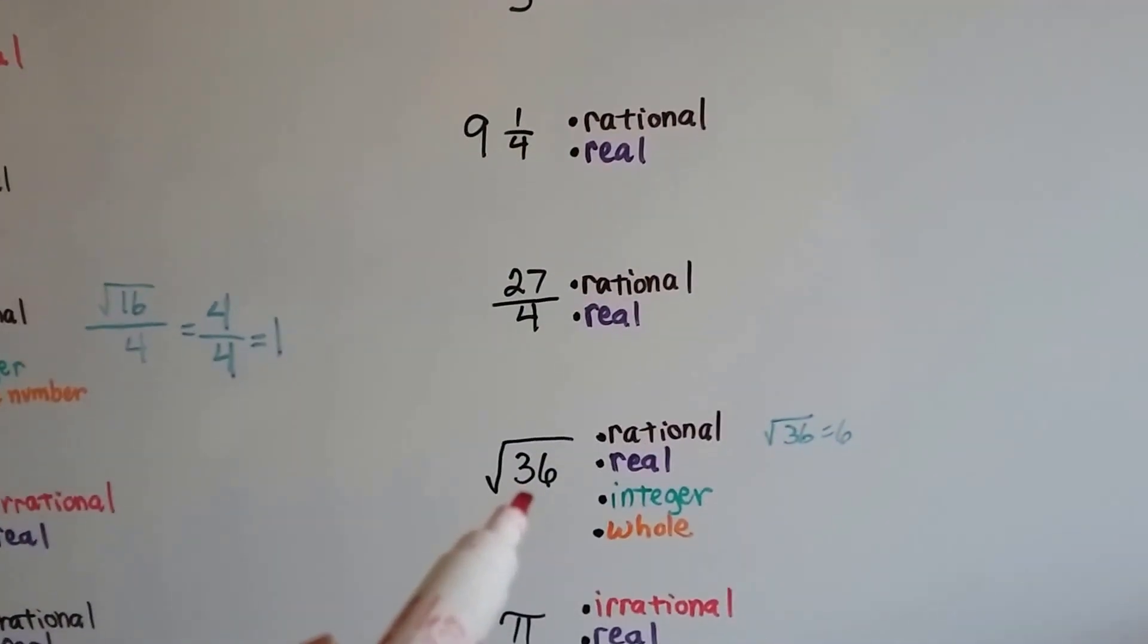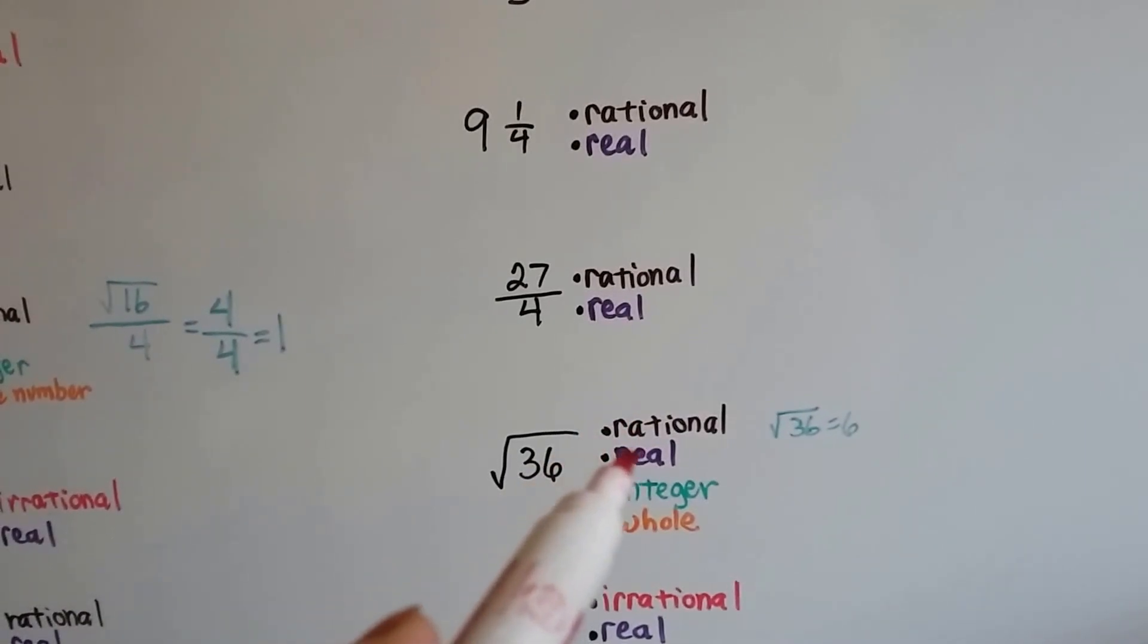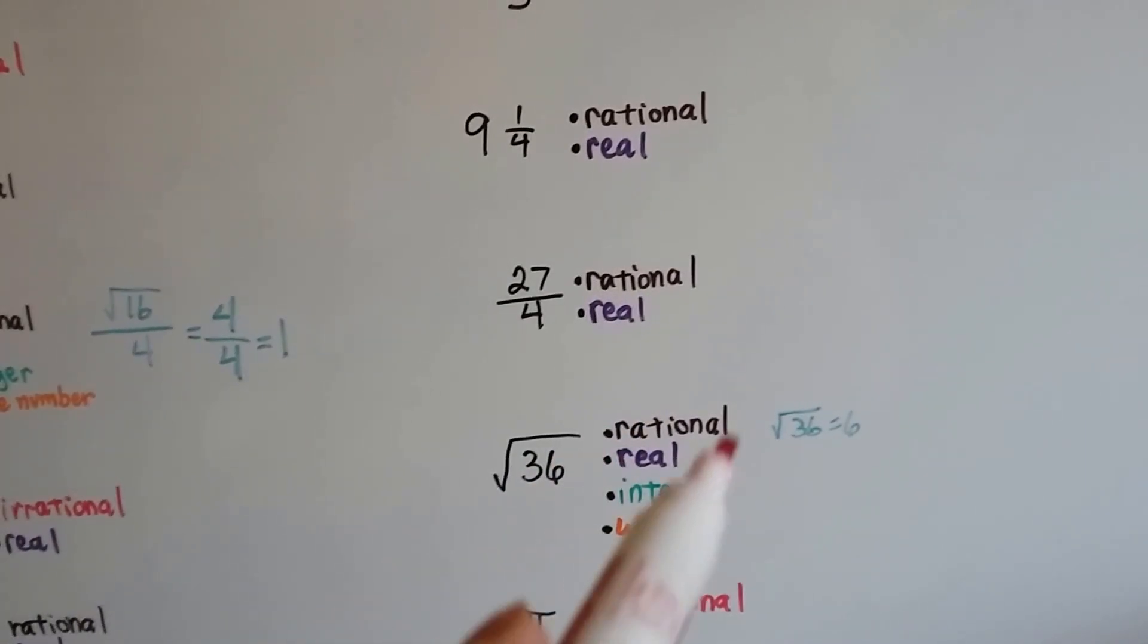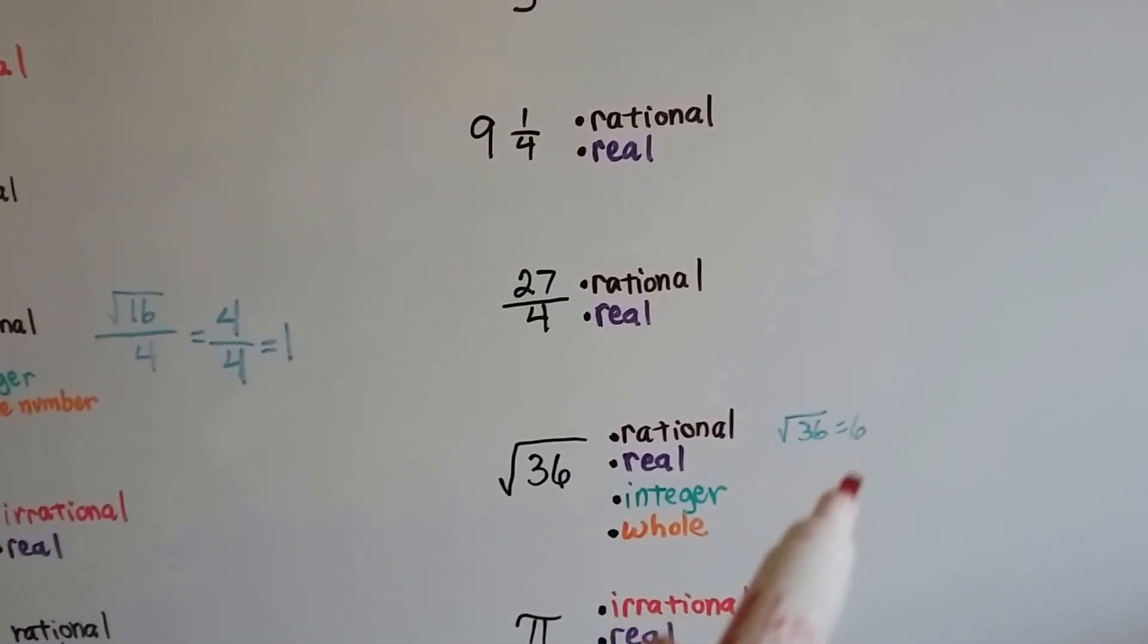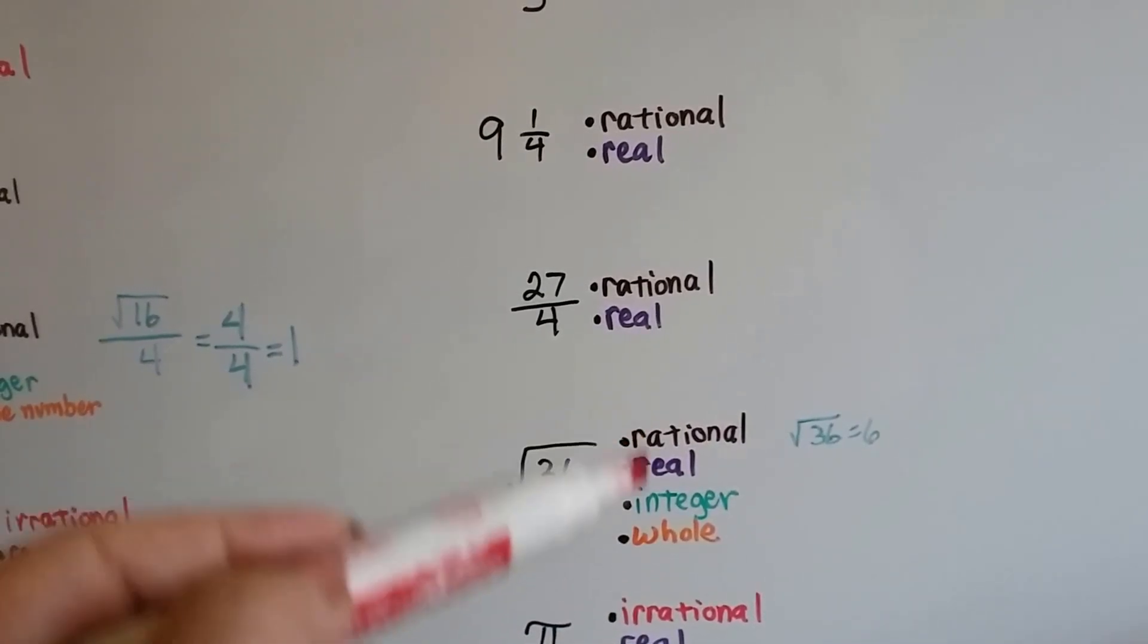The square root of 36. That's a rational number, a real number, an integer and a whole number because the square root of 36 is 6. And 6 is all of these.